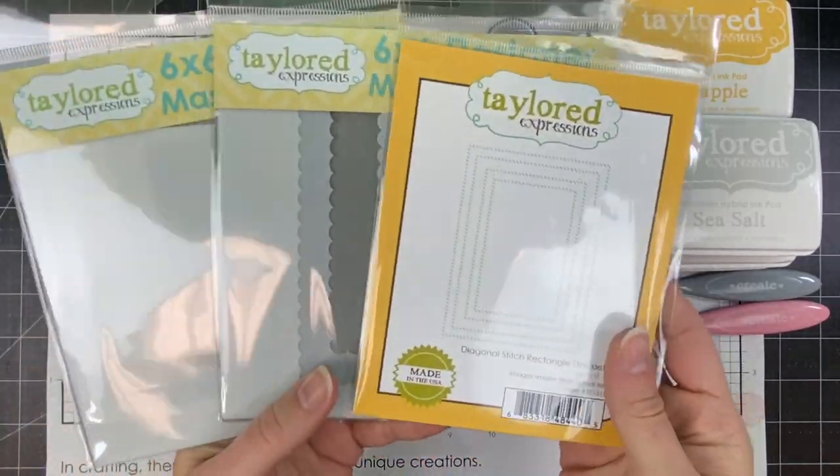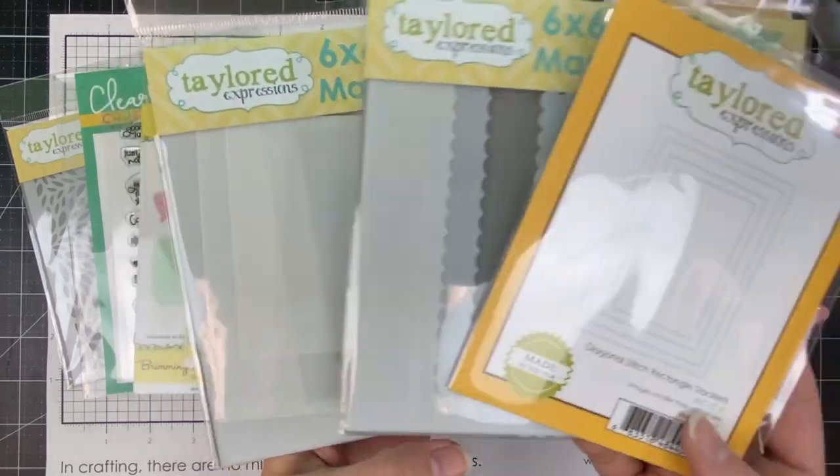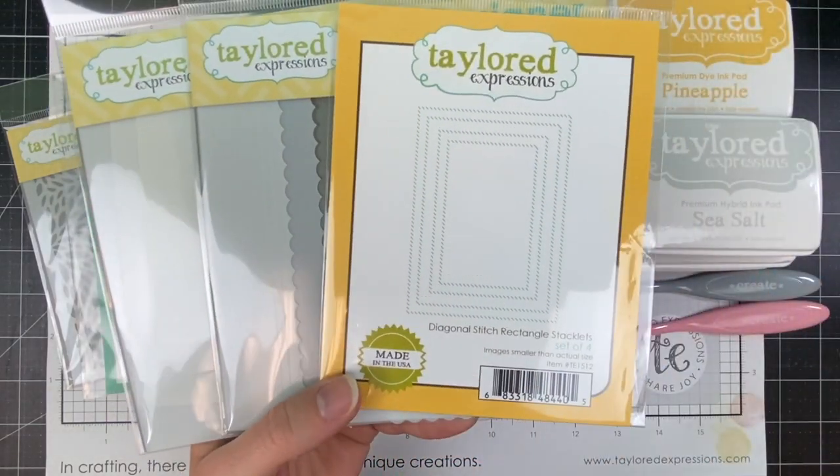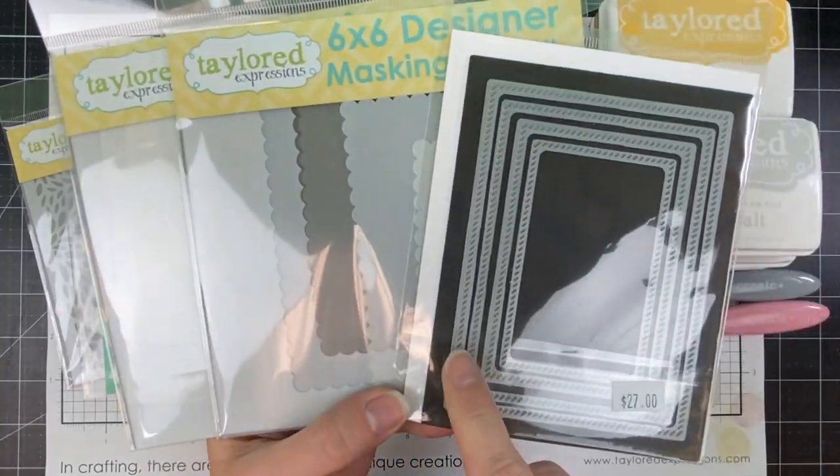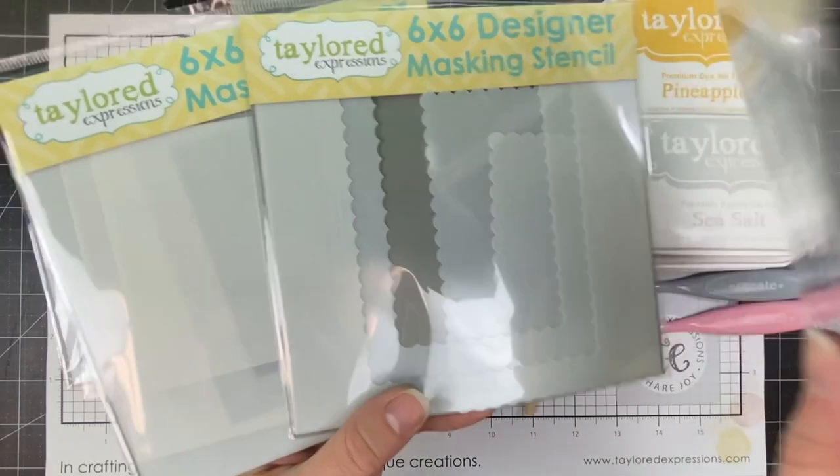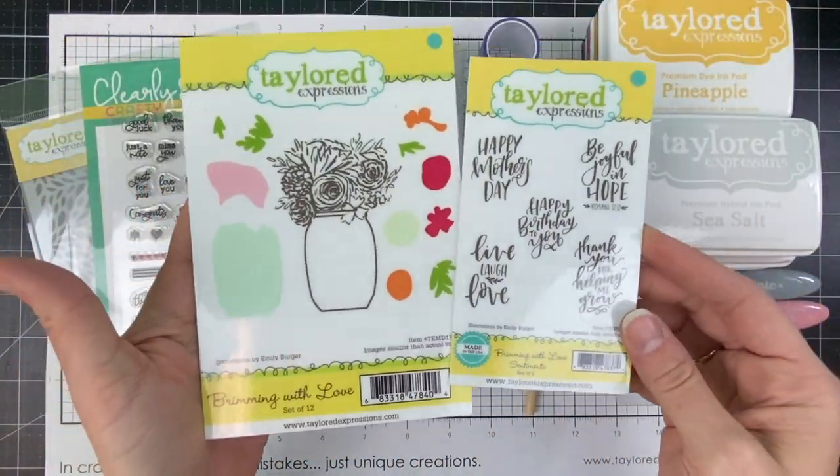We have our original masking stencil rectangle set that features two different sizes of rectangles. Then we have the scalloped masking rectangles that coordinate with it, and the diagonal stitch rectangle stacklets to create a diagonal stitch that fits on the inside and outside of both rectangle masking stencil shapes.